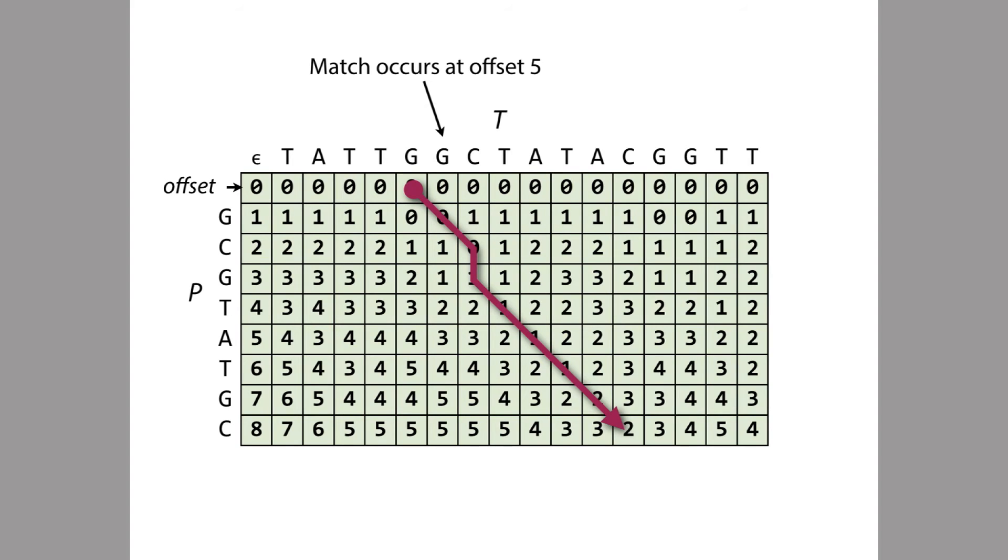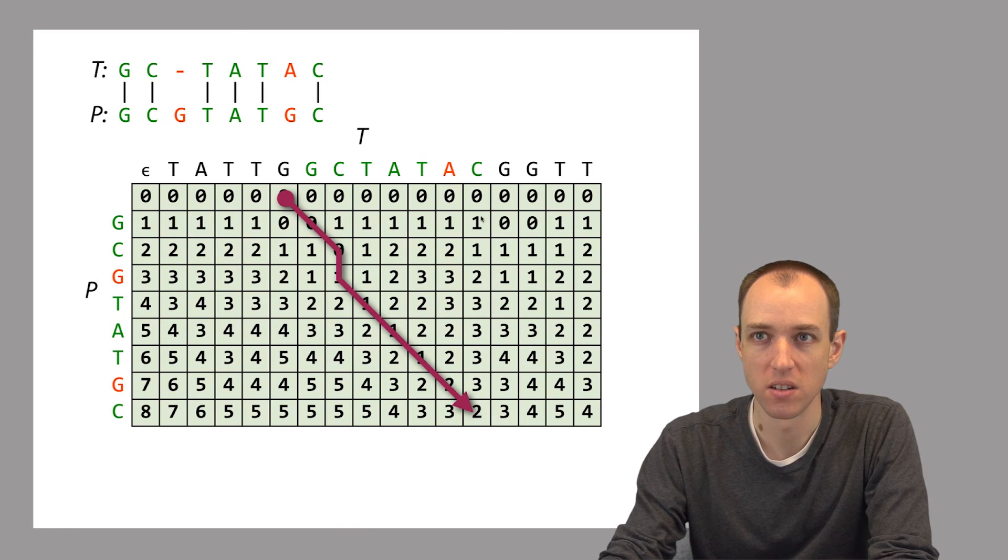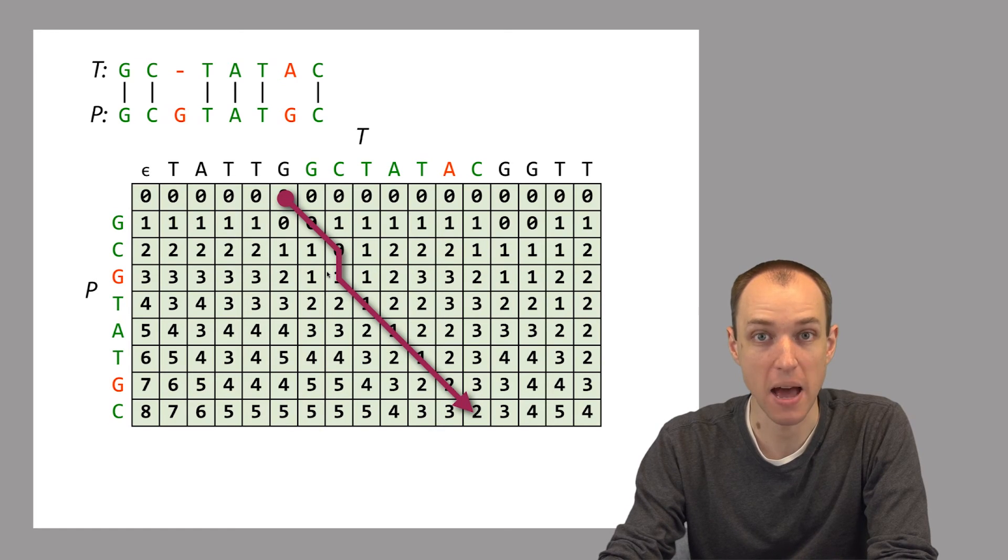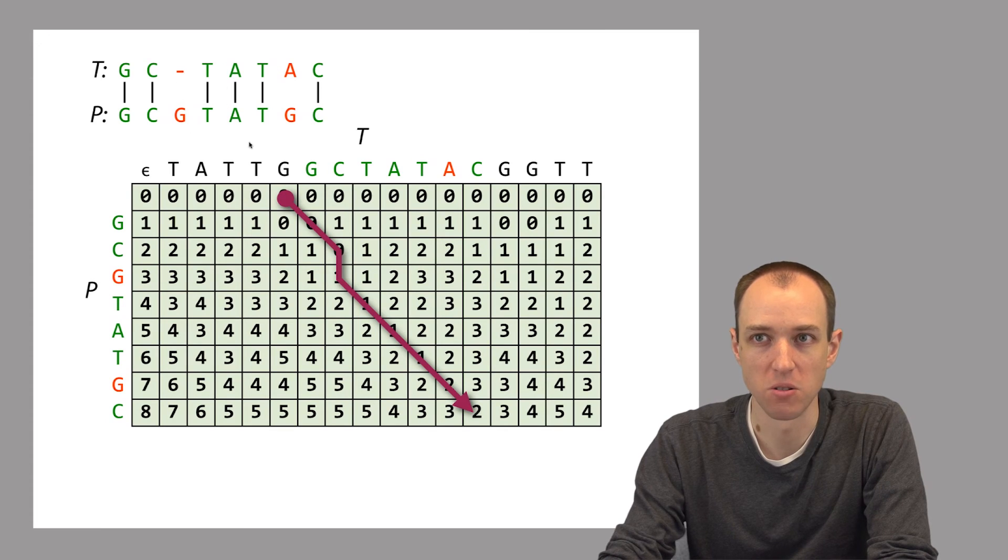Once we have the traceback we know exactly which substring of T matches with P with two edits. It's the substring that begins at offset 5 with respect to T. We know this because this element here is the first one where we've aligned a character from T to a character from P. In this case we've aligned to this G, the G at offset 5 in the text T, with the very first G of P. The other thing it tells us is the shape of the alignment. Specifically it tells us where the differences are between P and T. The vertical part of this traceback corresponds to the only gap in the alignment. We can write down the alignment that corresponds to the traceback, with matches highlighted in green and differences in red. Here is the gap that corresponds to the vertical step in the traceback. The overall shape of this alignment follows the overall shape of this traceback.